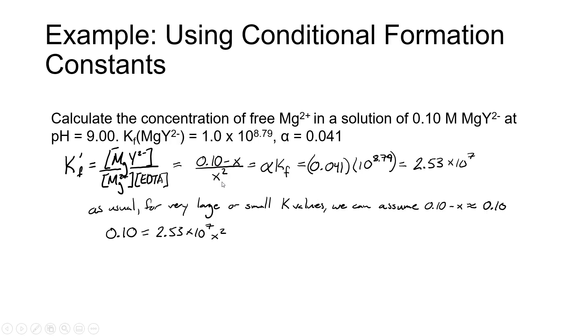So we're really solving 0.10 divided by X squared is equal to 2.53 times 10 to the 7th, and that gives us 0.10 is equal to 2.53 times 10 to the 7th times X squared. To solve for X, we're going to divide both sides of the equation by the value of the conditional formation constant and take the square root.